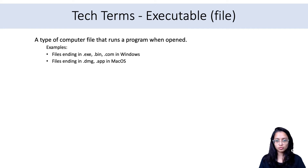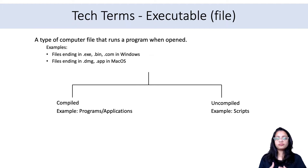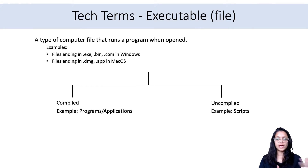First, let's understand what an executable file is. An executable file runs a program when opened. For Windows users, these are files with a .exe extension; for Mac users, .dmg or .app files. Executable files are of two types: compiled and uncompiled. Compiled ones come from app stores in .exe or .dmg format. Uncompiled executable files are scripts — ending in .sh, .r, or .pl — which are also used to perform functions and are considered executable files.